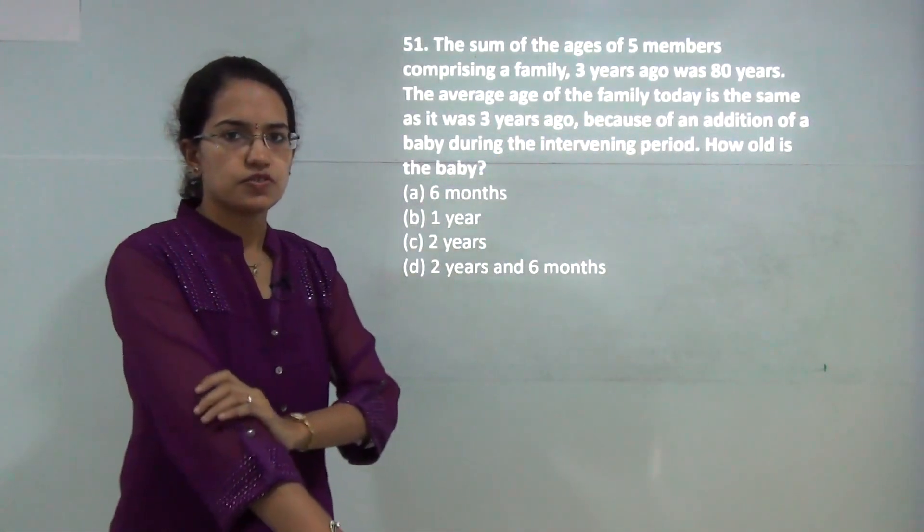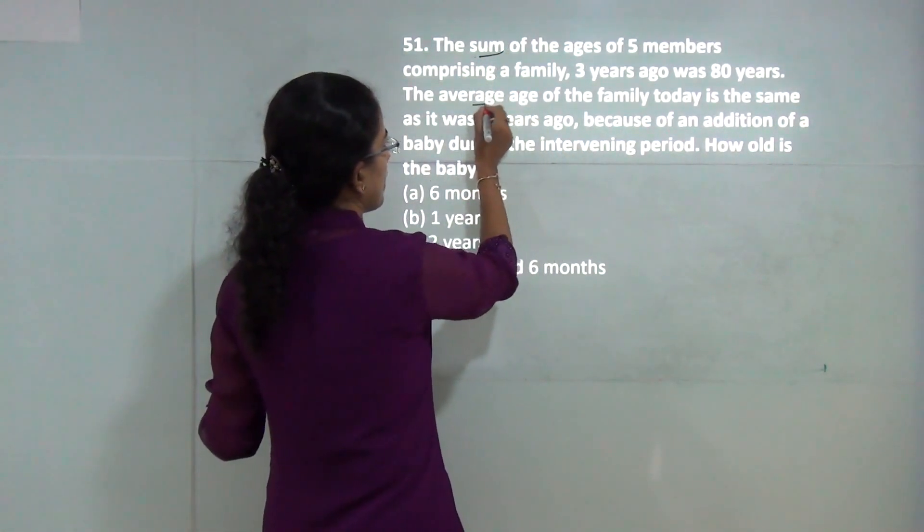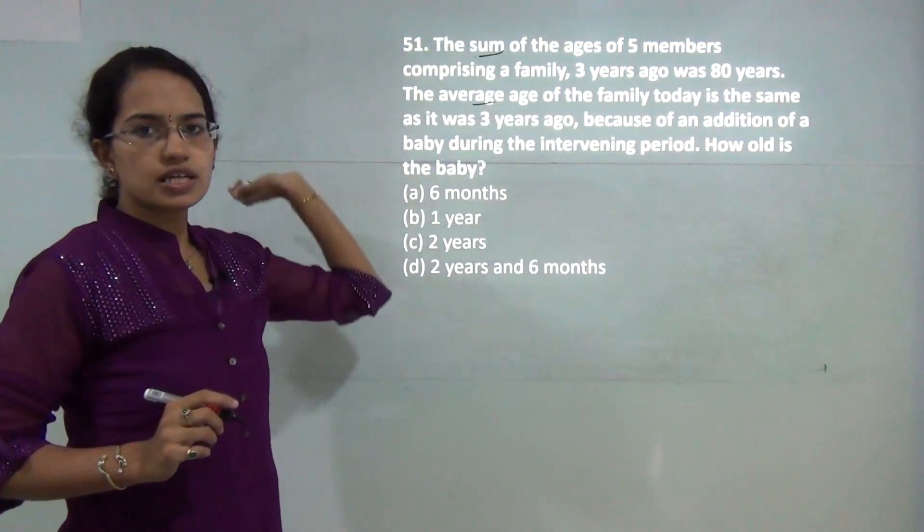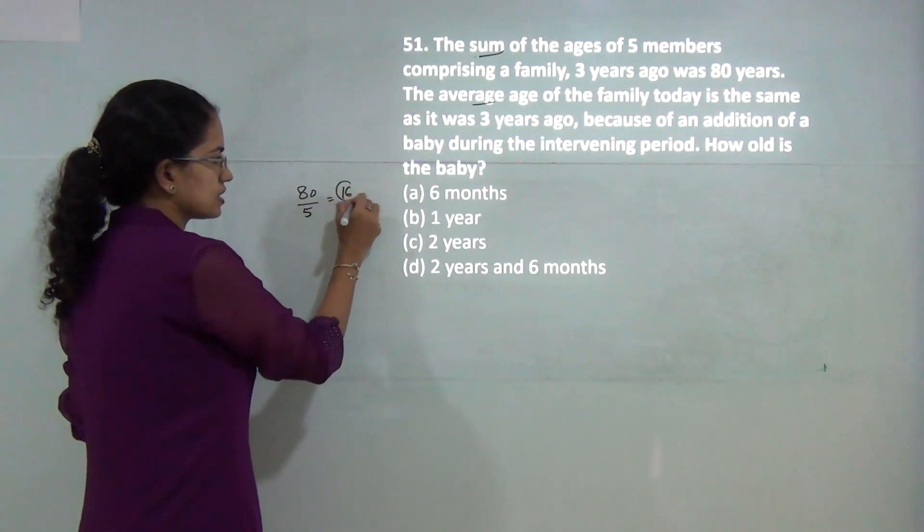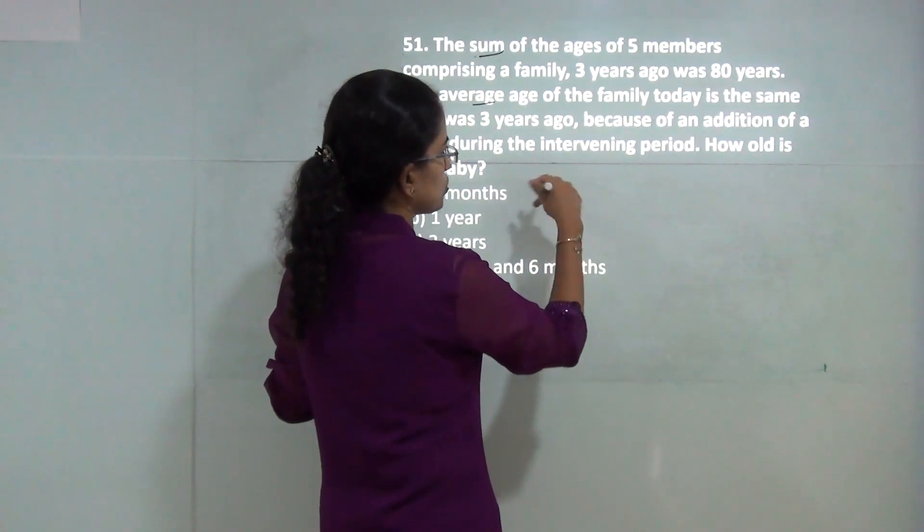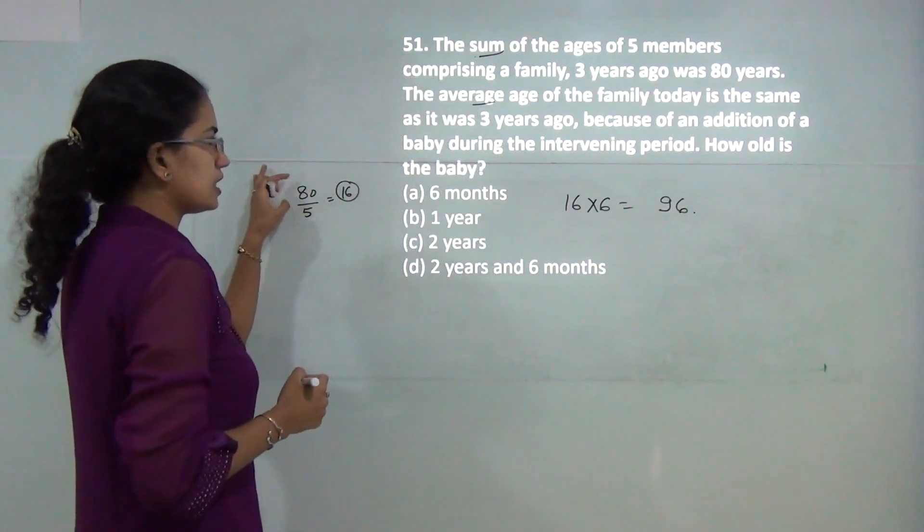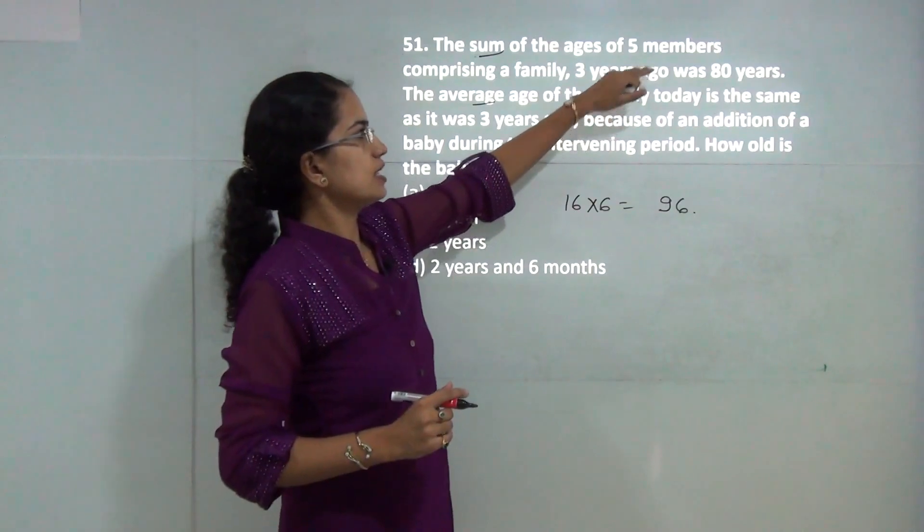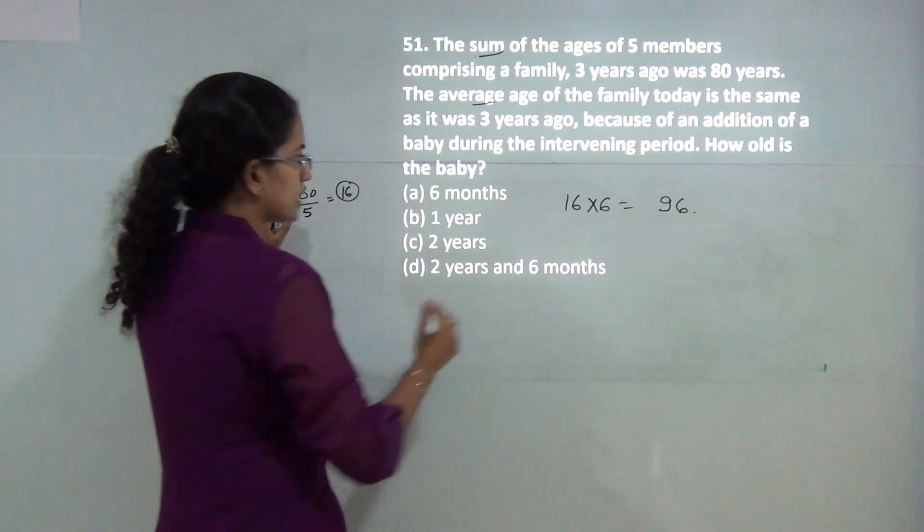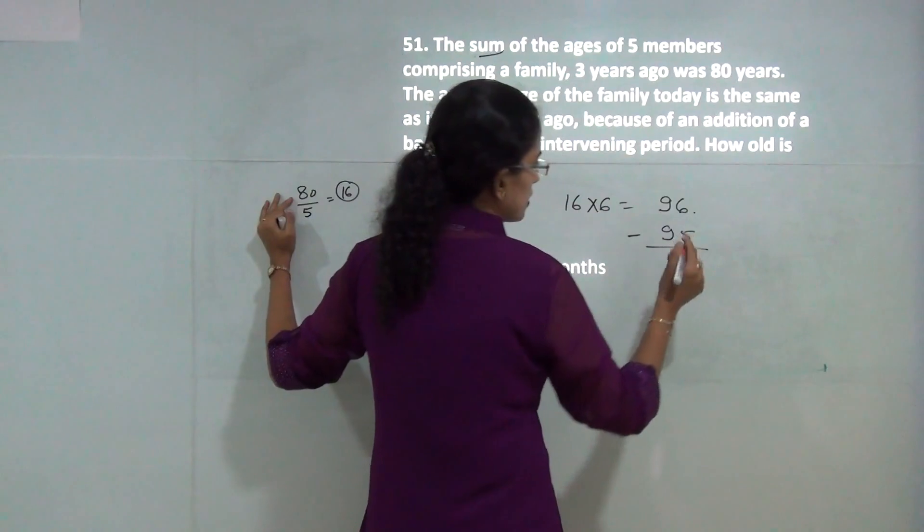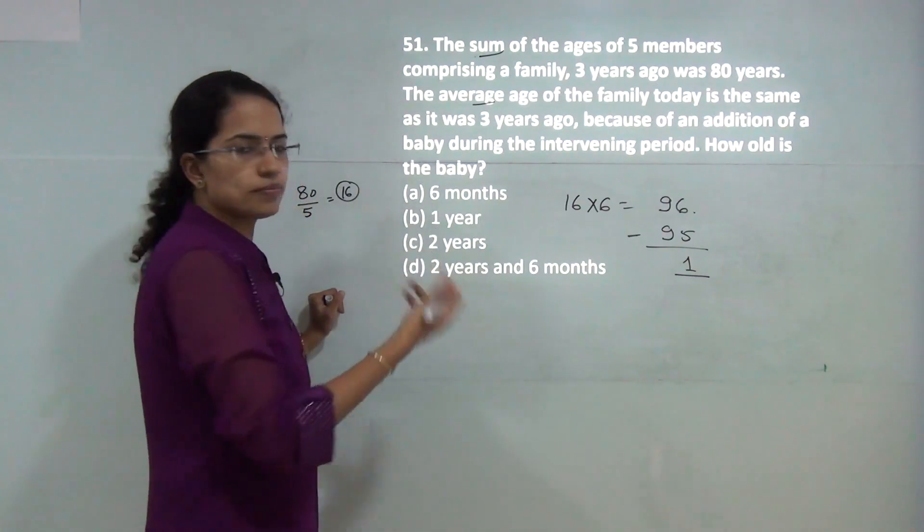In this session we will be covering the last 30 questions for the CSET paper 2. The first question asks about sum and average. The sum of 5 members 3 years ago was 80, so the average age 3 years ago would be 16. One more member is being added, so the new total age would be 96. Since 80 was 3 years ago, we add 3 years to all 5 members, so 3 times 5 is 15. Adding 15 to 80 gives 95, so 1 year would be the age of the new baby.